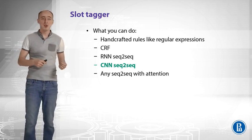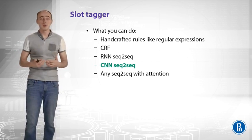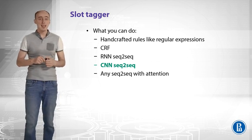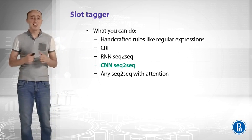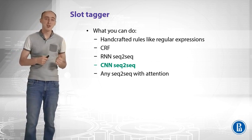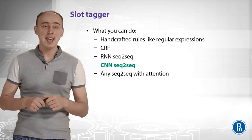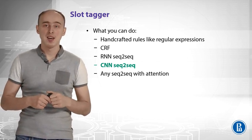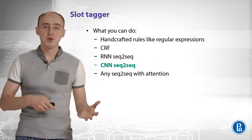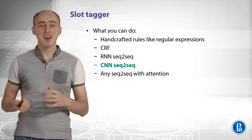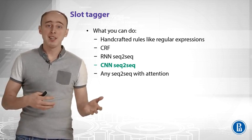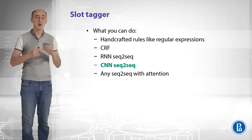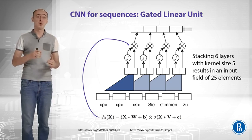You can use conditional random fields, which is a rather classical approach. Or you can use an RNN sequence-to-sequence model with an encoder and decoder. A funny fact is that you can also use convolutional networks for a sequence-to-sequence task, and you can add attention to any of these sequence-to-sequence models. In the next slide, I want to overview the convolutional sequence-to-sequence model because it is gaining popularity — it works faster and sometimes even beats RNN on some tasks. Let's see how convolutional networks can be used to model sequences.